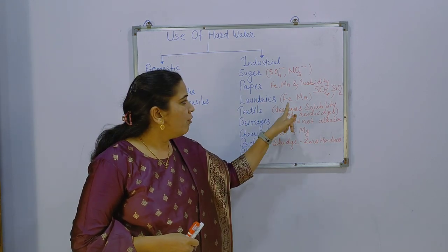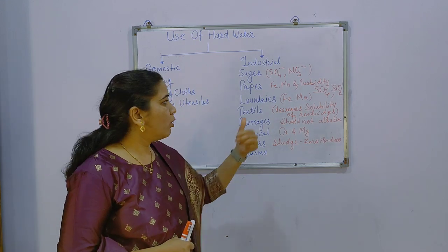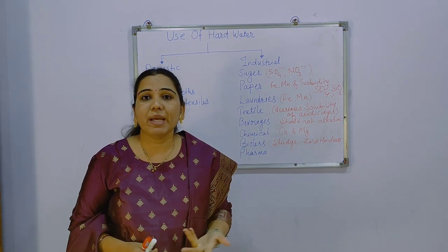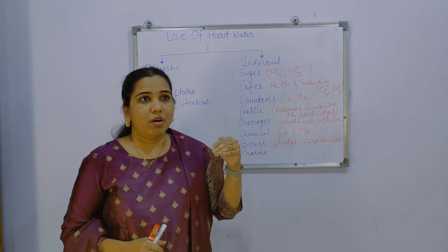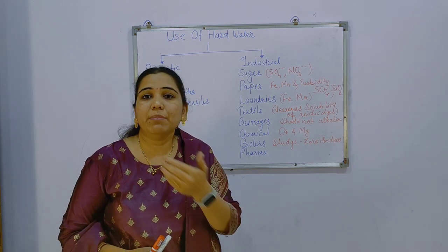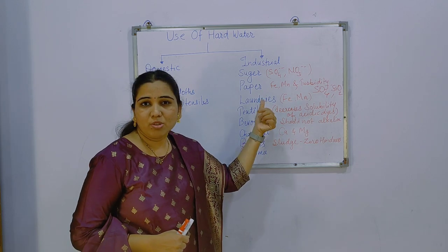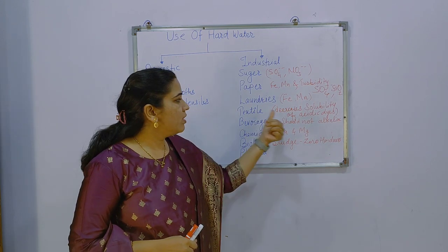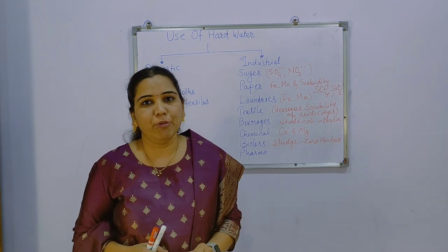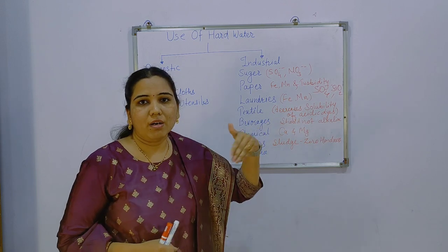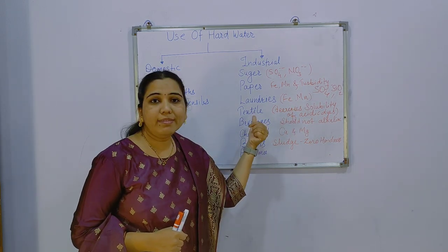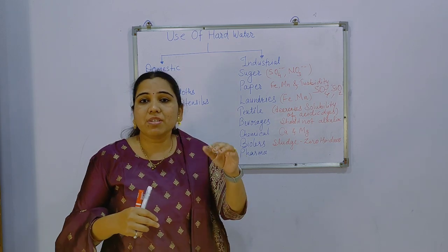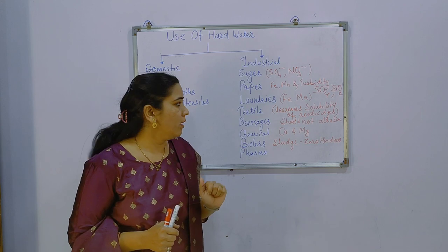Next are laundries. In laundries, whenever Fe or Mn type of ions are present in water, the washed clothes may develop different shades or stains — for example, white-colored cloth can become somewhat grayish. So hard water should not be used in laundries. In the textile industry, due to the presence of alkaline-type ions, there is an increase in alkalinity of the water, and if it is used, there may be a decrease in acidity. Acidic dyes become less concentrated and cannot be used effectively in textile production.